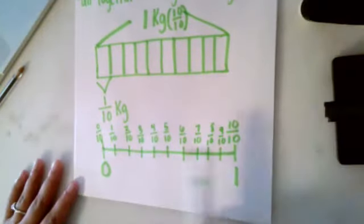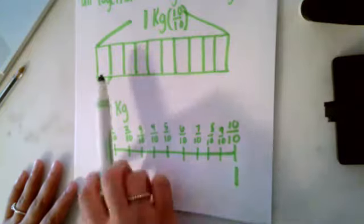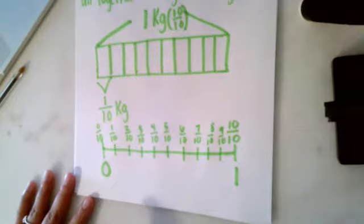So here's my number line, very similar to my tape diagram, right? One-tenth, two-tenths, three-tenths, right? I sectioned it into 10 sections because we're talking about tenths.